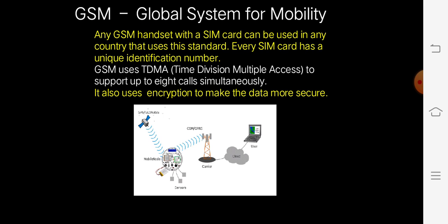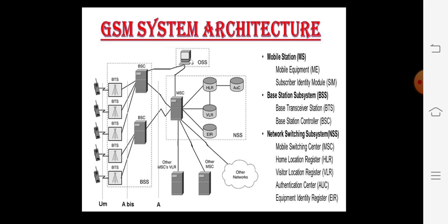GSM also uses encryption to make the data more secure. Encryption is the method of converting the original data into another form. Looking at the GSM architecture, it has three important sections: the Mobile Station, the Base Station, and the Network Switching Subsystem. The Mobile Station is the mobile device with the SIM card. The Base Station is the carrier or the tower. The Network Switching System comprises the GPS and the networking components.